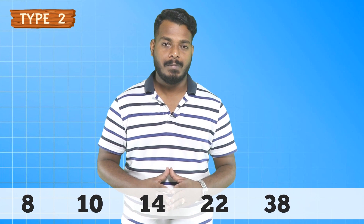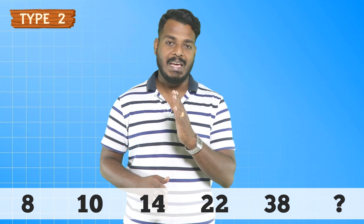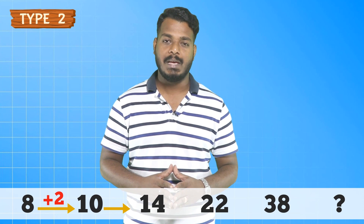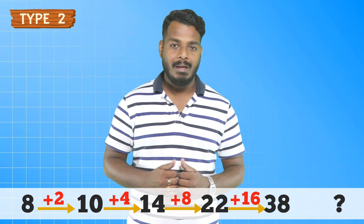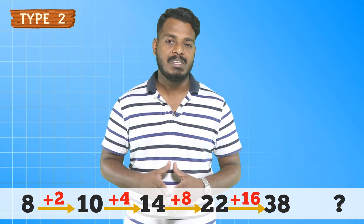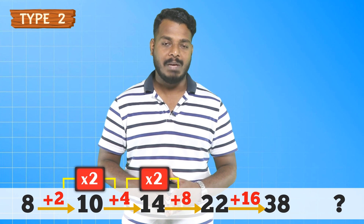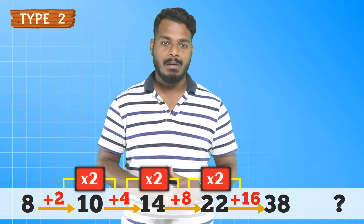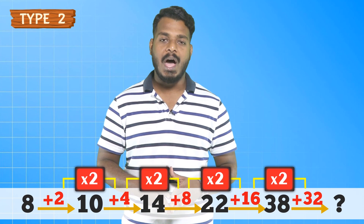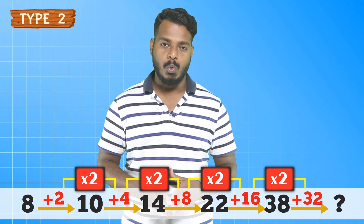Type 2 — have a look at the series: 8, 10, 14, 22, 38, question mark. The difference between 8 and 10 is 2, the next difference is 4, the next is 8, next is 16. Every other difference is 2 times the previous one: 2×2=4, 2×4=8, 2×8=16. So the next difference would be 2×16, that is 32. Your answer would be 38 plus 32, that is 70.